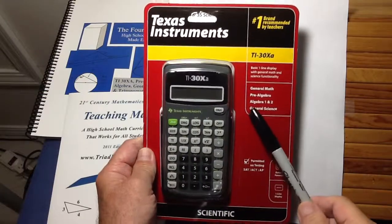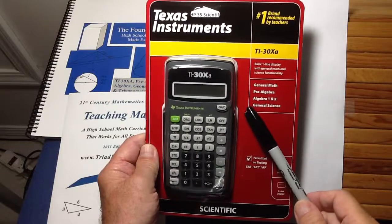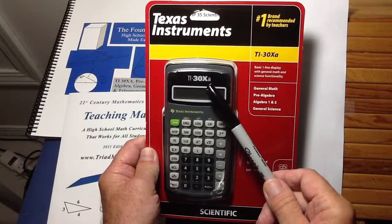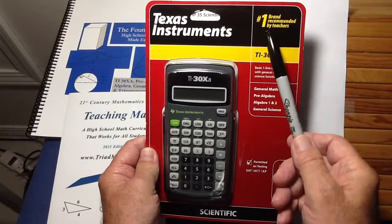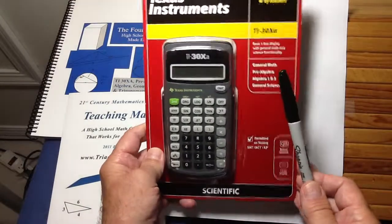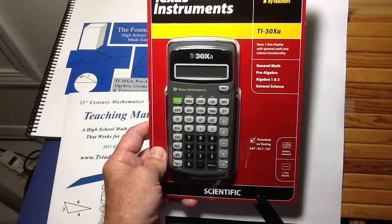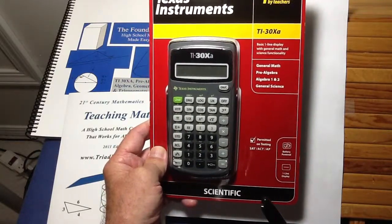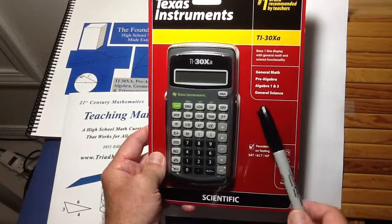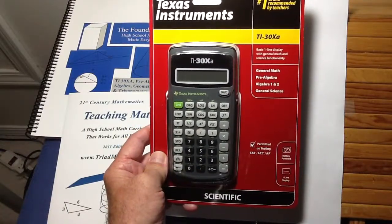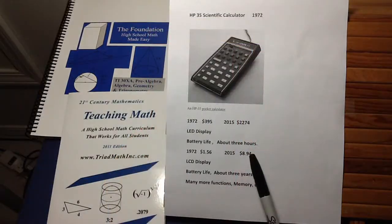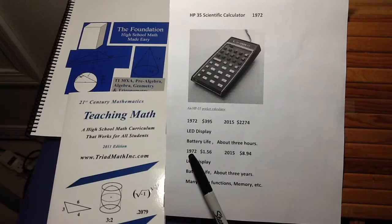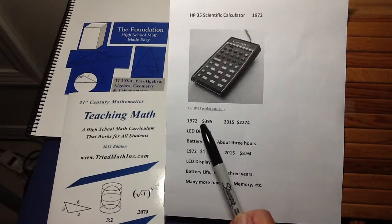Now, fast forward until today, 2015. This is a Texas Instruments Calculator, the TI-30XA. It says it's number one brand recommended by teachers. It's certainly my favorite calculator to use when teaching algebra, geometry, and trigonometry for practical math people. And I just bought this at Walmart for $8.94. Now, $8.94 today would have been $1.56 back in 1972. So just imagine where we've come from.